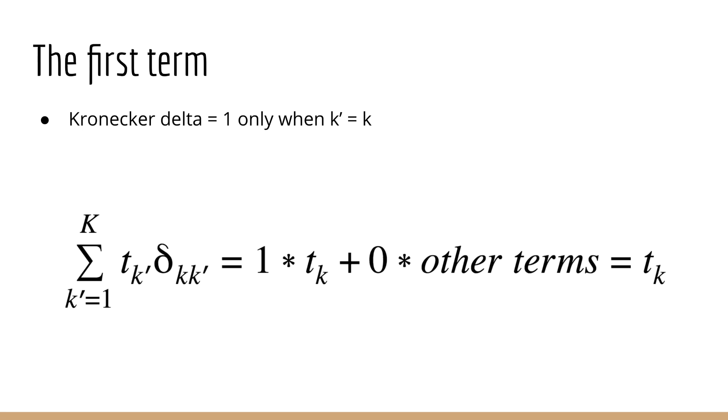So let's look at the first term. Remember that delta is 1 only when k' is equal to k. Therefore, for any other values of k', we get 0, and anything multiplied by 0 is still 0. Therefore, this is just equal to t_k.